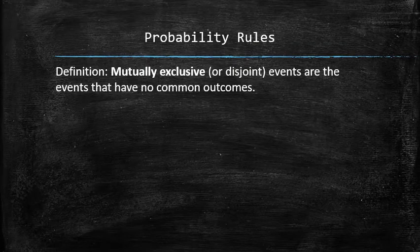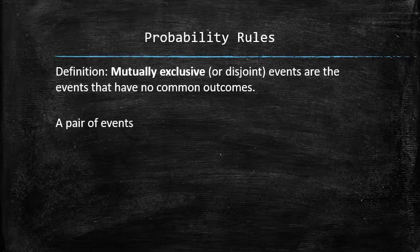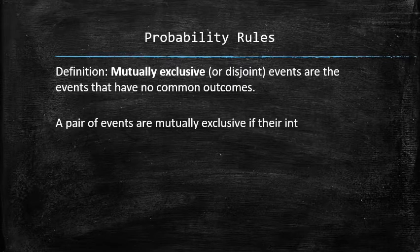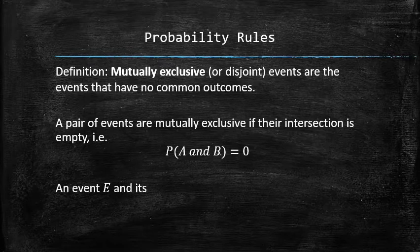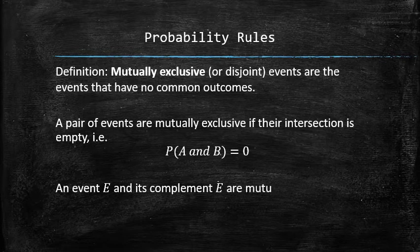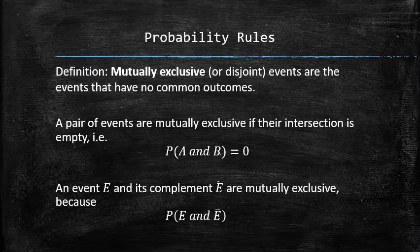A few more remarks about mutually exclusive events. A pair of events are mutually exclusive if their intersection is empty, and vice versa. This is the only way to determine whether a pair of events are mutually exclusive or not. Also, an event E and its complement are always mutually exclusive, because their intersection is equal to the empty set by definition.